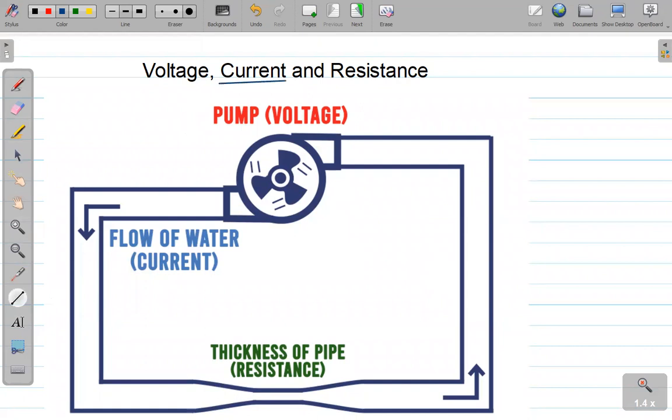Let's discuss current first of all. Now current can be thought of as the flow of water. Suppose you have this pipe system, and the water flowing through those pipes basically symbolizes current. The water is actually the electrons.